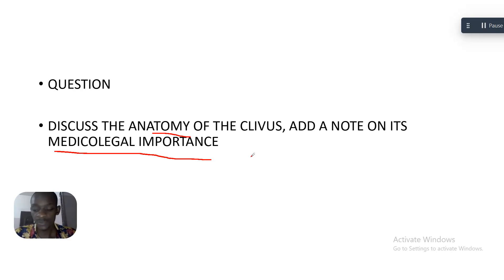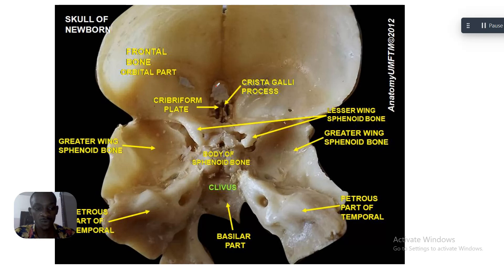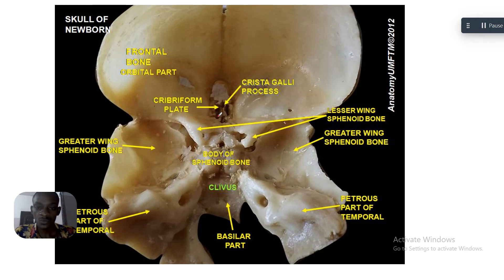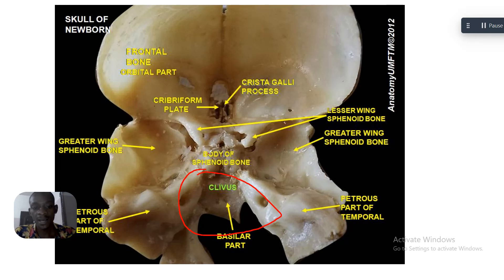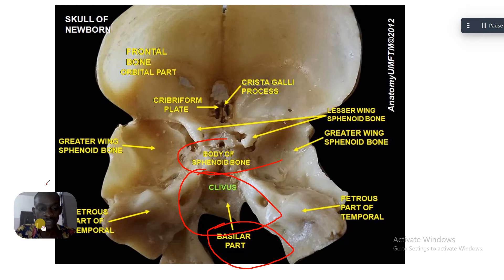We always use images on our channel because images are something you remember easily — when you relate to an image, even without the write-up, you can form your own understanding. This image shows the inner parts of the skull, and here we have the clivus formed by the sphenoid bone, the basilar part of the occipital bone, and the petrous part of the temporal bone.